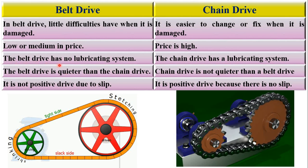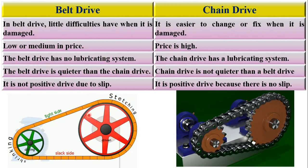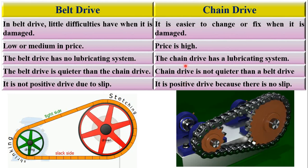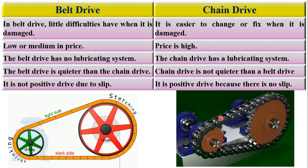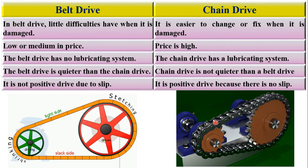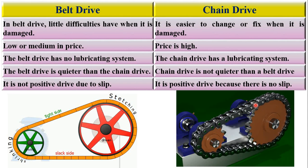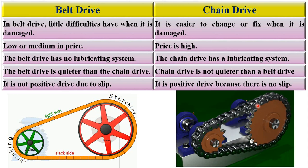The belt drive has no lubricating system. Whereas in the case of chain drive, it is essential to lubricate between the parts.